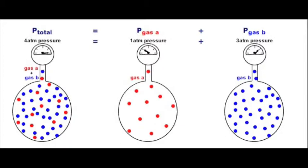Dalton's law of partial pressures. Dalton's law states that the total pressure exerted by a gaseous mixture is equal to the sum of the partial pressures of each individual component in a gas mixture. This experimental law was observed by John Dalton in 1801 and is related to the ideal gas law.